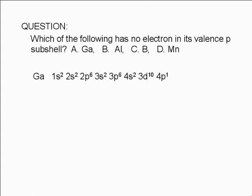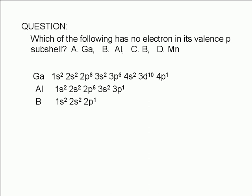For aluminum, the electron configuration is 1s2, 2s2, 2p6, 3s2, 3p1. For boron, the electron configuration is 1s2, 2s2, 2p1.